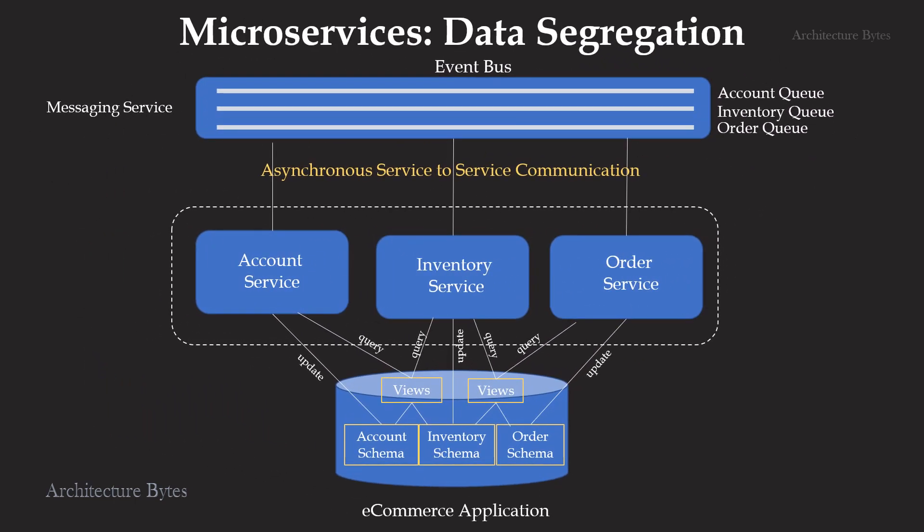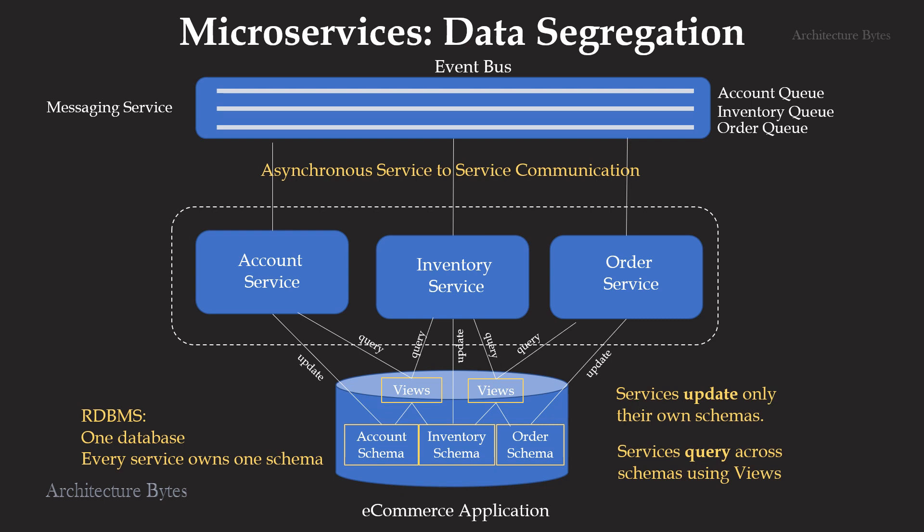Let's discuss data segregation in microservices. Ideally, every microservice should update and query only its own data. However, this isn't always easy. Assuming you are using an RDBMS, we have separate schemas for each service in a single database — that takes care of data segregation. Individual services still update their own schemas. However, when it comes to querying data, you can build an abstraction layer on top of these schemas using views. These views join and query data across schemas and they do not belong to any particular service. Thus, your updates are neatly segregated, but reads can span across service schemas.